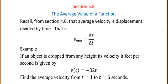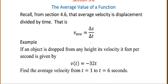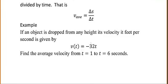Remember that velocity from section 4.6 - the average velocity was the change in position divided by the change in time. We also talked about this back in chapter two. Now let's take a look at how this would work. If we drop an object from some height, assuming we're at the Earth's surface, the velocity is given by negative 32t feet per second.